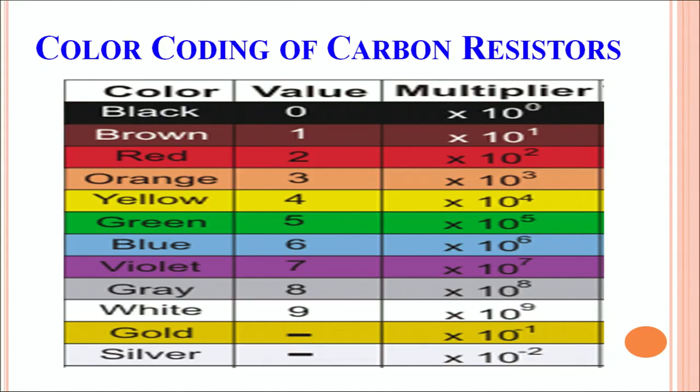How does one read the resistance value associated with these colors? This is mapped in this table. In the first column, you can see the colors listed here: black, brown, red, orange, yellow, etc. And in the second column, you can associate a digital value to this color. For example, black has a digital value 0, brown 1, red 2, orange 3, and so on. The digital value goes from 0 to 9 and as far as the colors are concerned, you are going from black to white color.